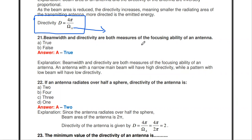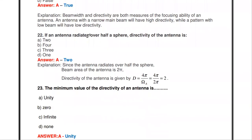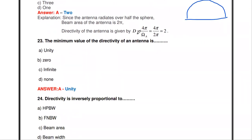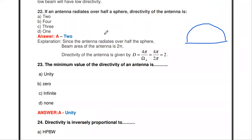Beam width and directivity are both measures of the focusing ability of the antenna — true. If an antenna radiates over a half sphere, what is its directivity? A half sphere has an area of 2π steradians. So D = 4π / 2π = 2. The directivity of an antenna radiating over a half sphere is 2.